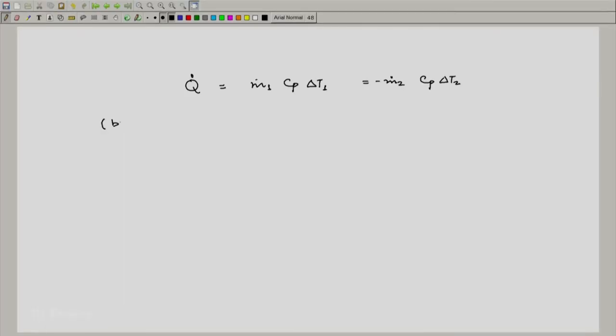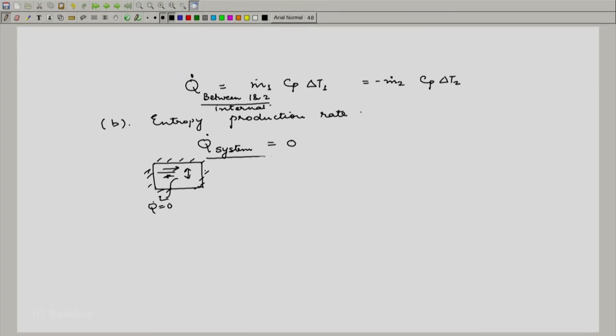So this is part b, this is entropy production rate. You see that we have assumed that Q dot for the entire, this Q dot is between stream 1 and 2, but Q dot for the entire open system we assumed is equal to 0. So for this entire black box that we drew here, Q dot is equal to 0 because there is only an exchange of Q between 1 and 2 in between the two streams which are flowing here. I do not know how they are flowing, but there is an exchange. This is entirely internal here.